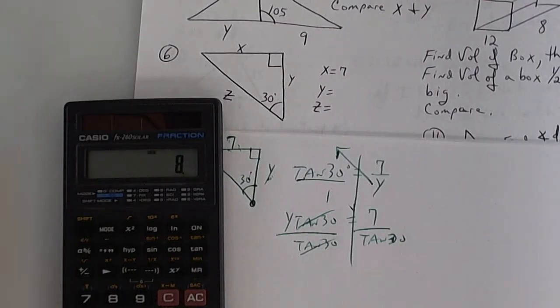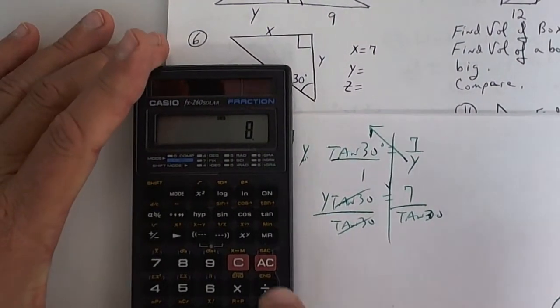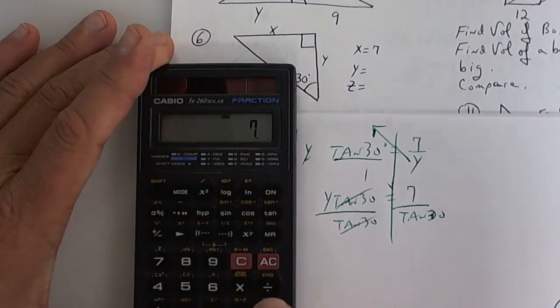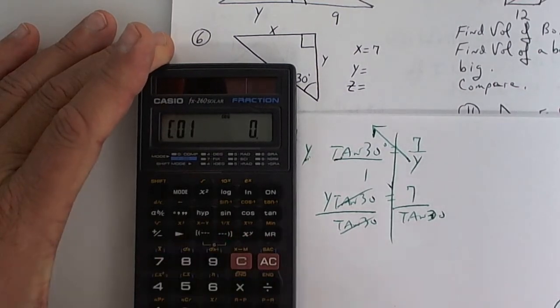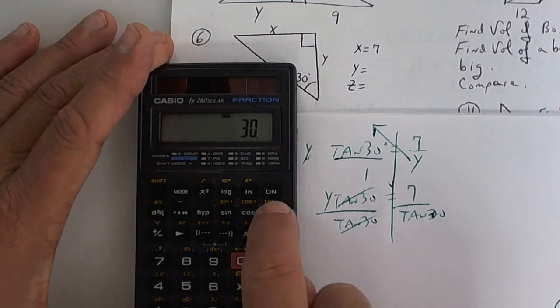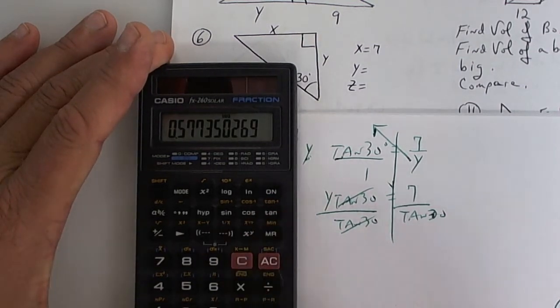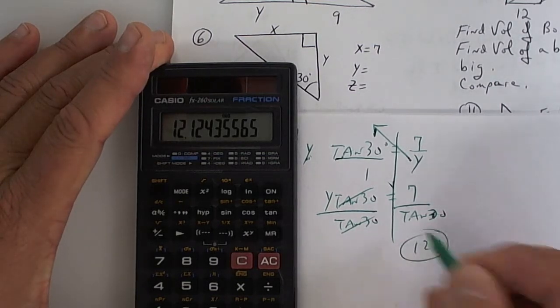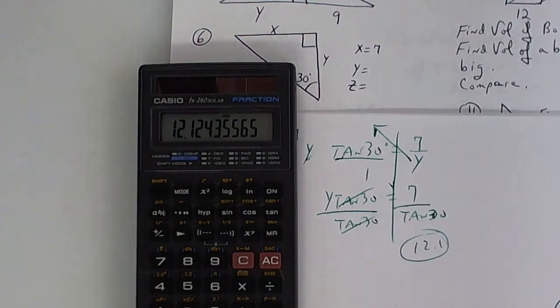Alright, cross multiply. You're going to get Y times the tangent of 30 is equal to 7. Then you're going to divide by the tangent of 30. So clear your calculator. We're going to work this one. Now on this black one, which you're going to be forced to use, look up here. You would take 7, divide it by open parentheses. It looks weird, but this is the way you do it. And then 30, press tangent, close parentheses, and press equals.